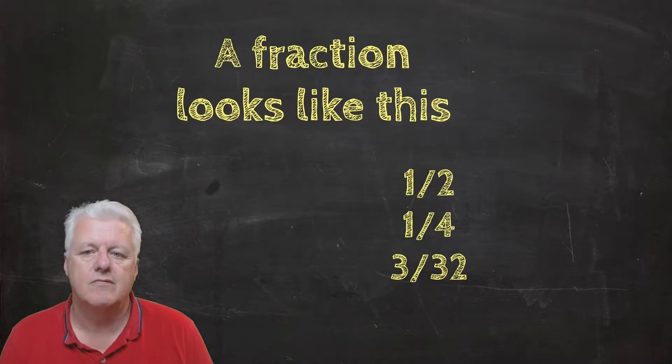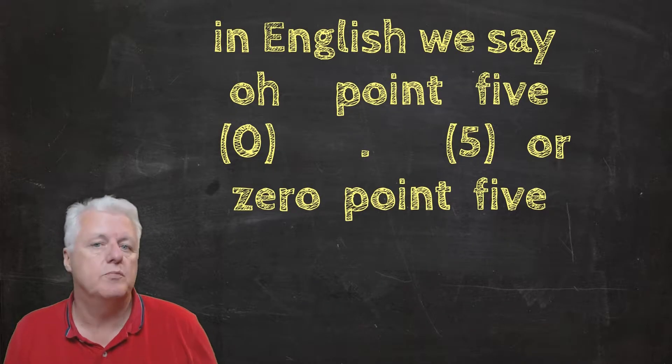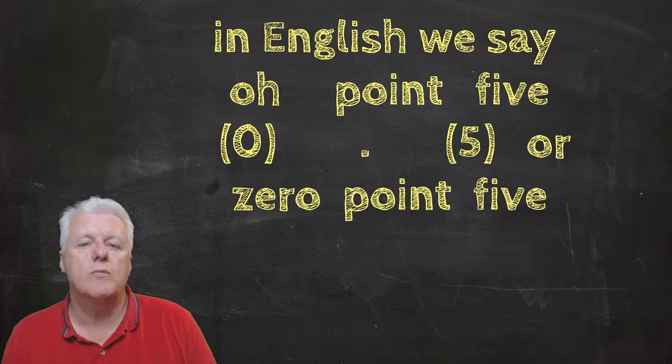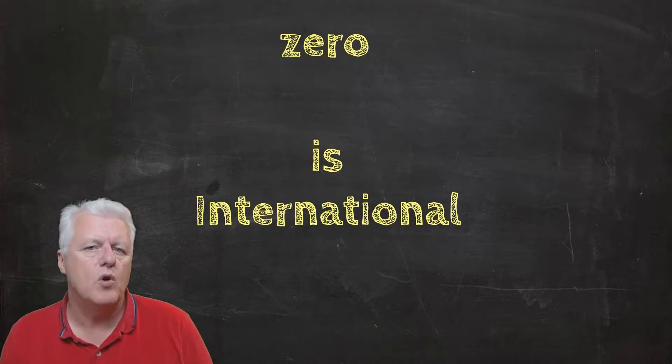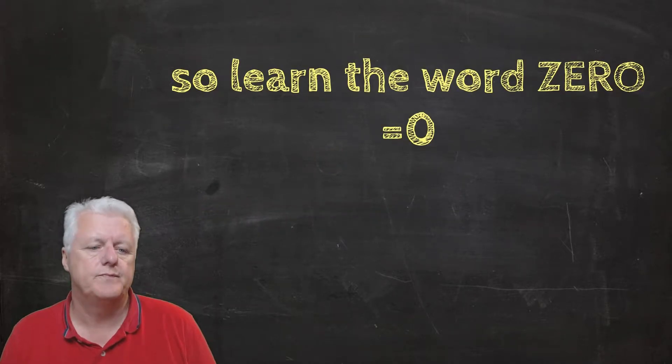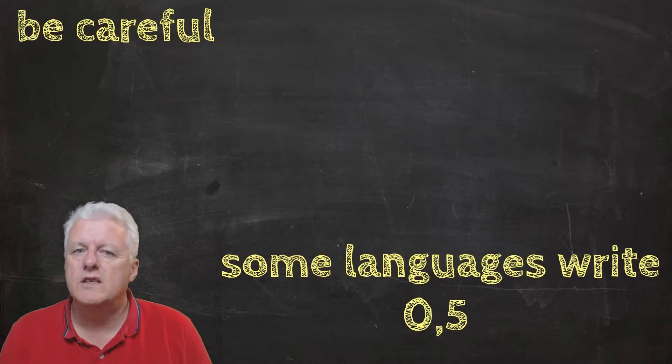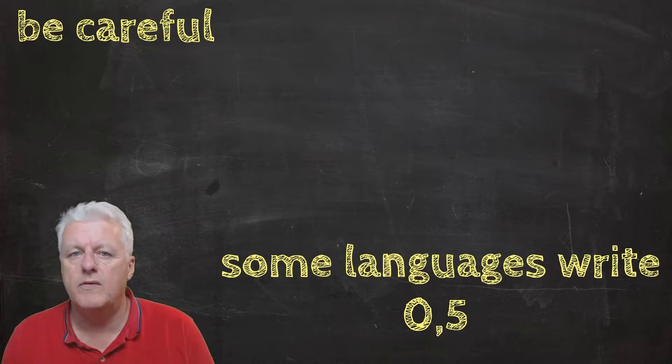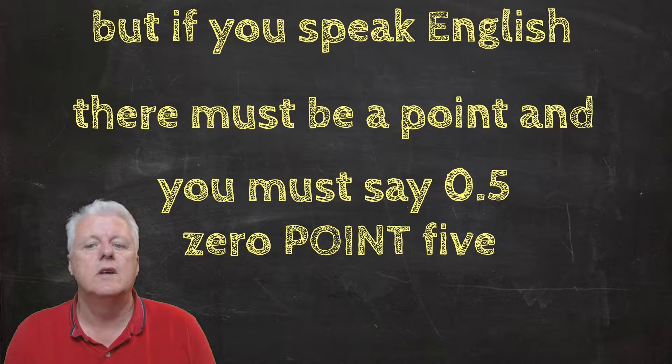How do you say decimal numbers in English? Well, in English we say 0.5, which is British English, or 0.5. I would advise that you learn to say the word zero. Be careful—some languages write zero comma five, but in English we have a decimal point and you must say 0.5 or 0.5.